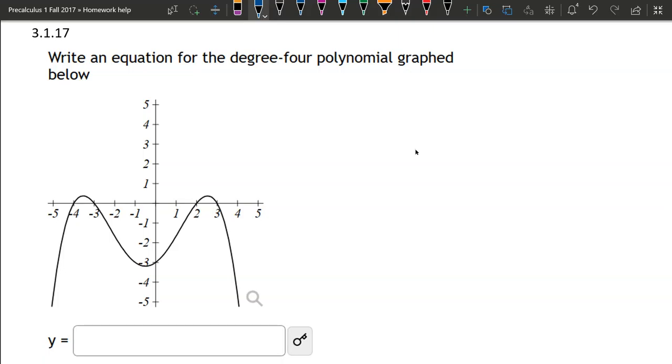So we're going to write our equation for the degree-4 polynomial. And we have some x-intercepts, also known as zeros, right there. Let's write them out: x equals negative 4, x equals negative 3, x equals 2, x equals 3.